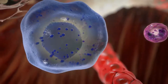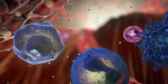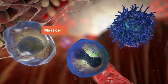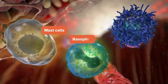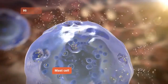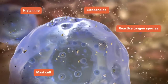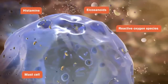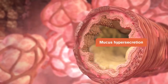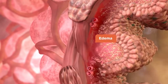The production of a Th2 cytokine milieu, either by allergen-dependent or independent pathways, promotes the activation of mast cells, basophils, and macrophages, which release pro-inflammatory mediators such as histamine, eicosanoids, and reactive oxygen species. This results in mucus hypersecretion, airway smooth muscle cell contraction, and edema, all of which narrow the airways.